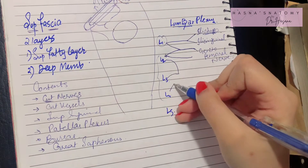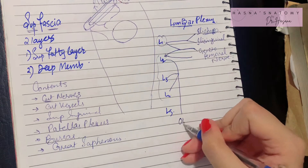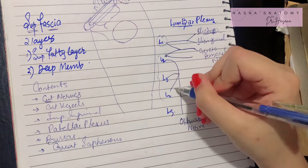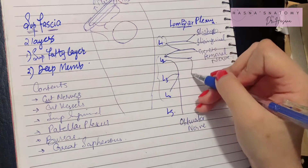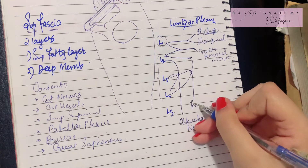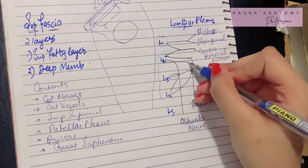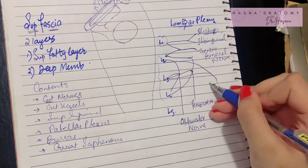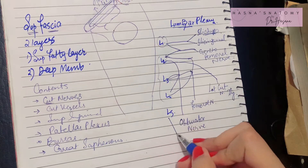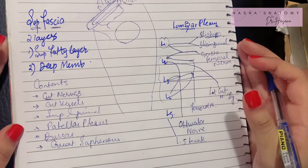When the anterior divisions of L2, L3, and L4 combine, the obturator nerve is formed. When the posterior divisions of L2, L3, and L4 combine, they give the femoral nerve. Finally, L2 and L3 give the posterior division known as the lateral cutaneous nerve of the thigh. L5 will give the lumbosacral trunk. This is your lumbar plexus.